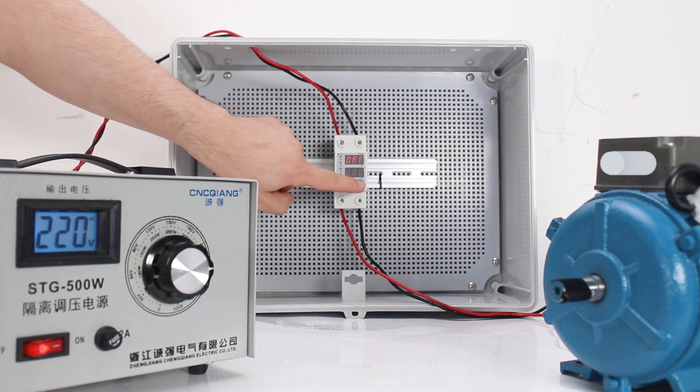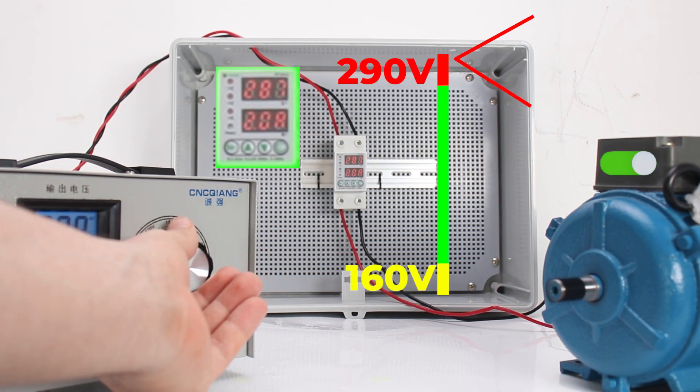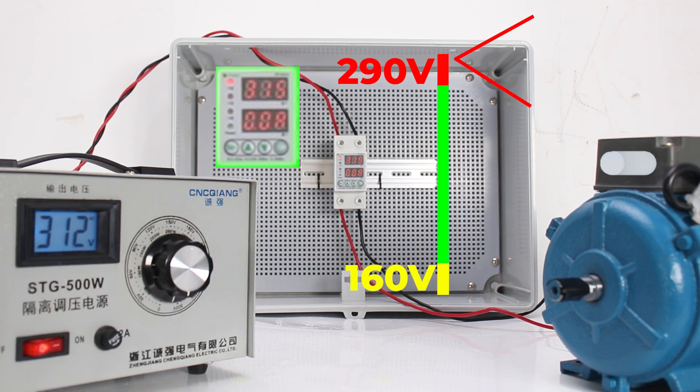We supply electricity and change the voltage, artificially simulating overvoltage in the power grid. We see that the device has turned off.